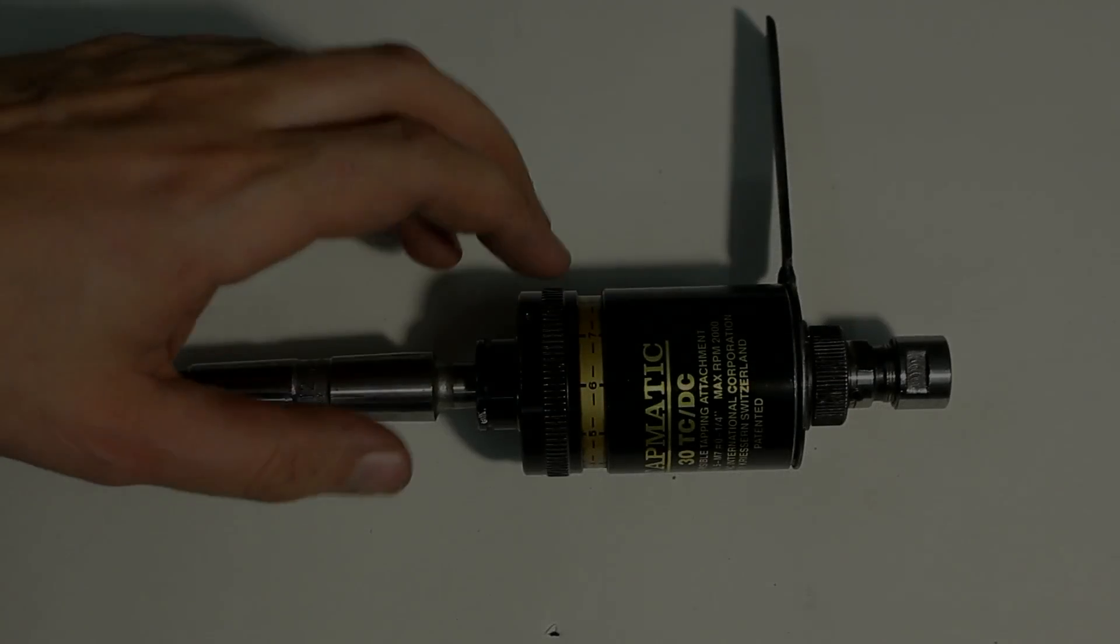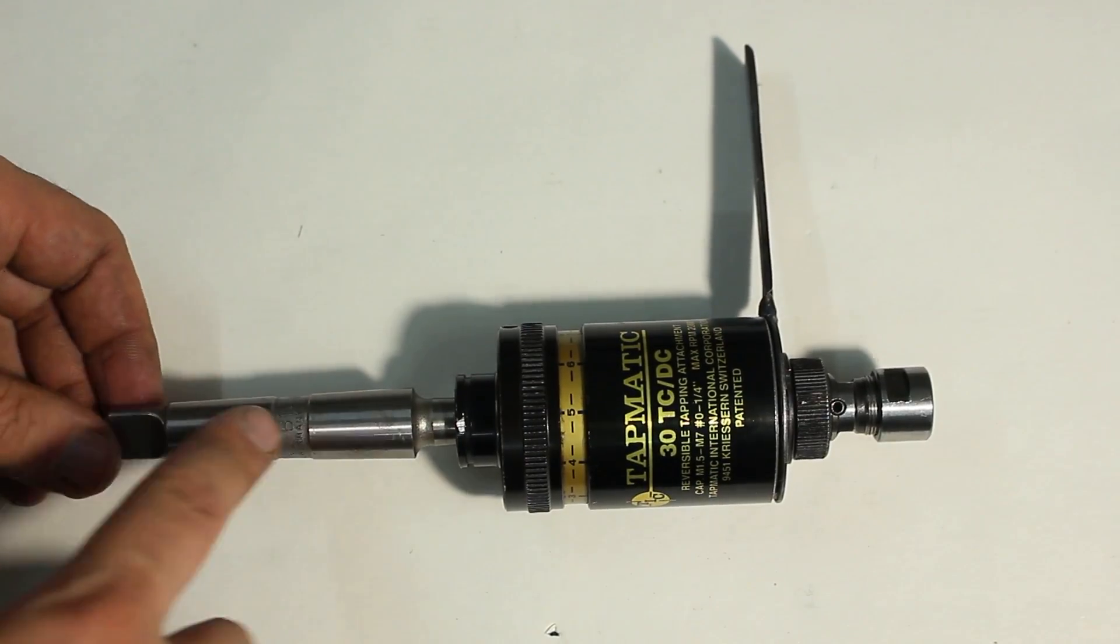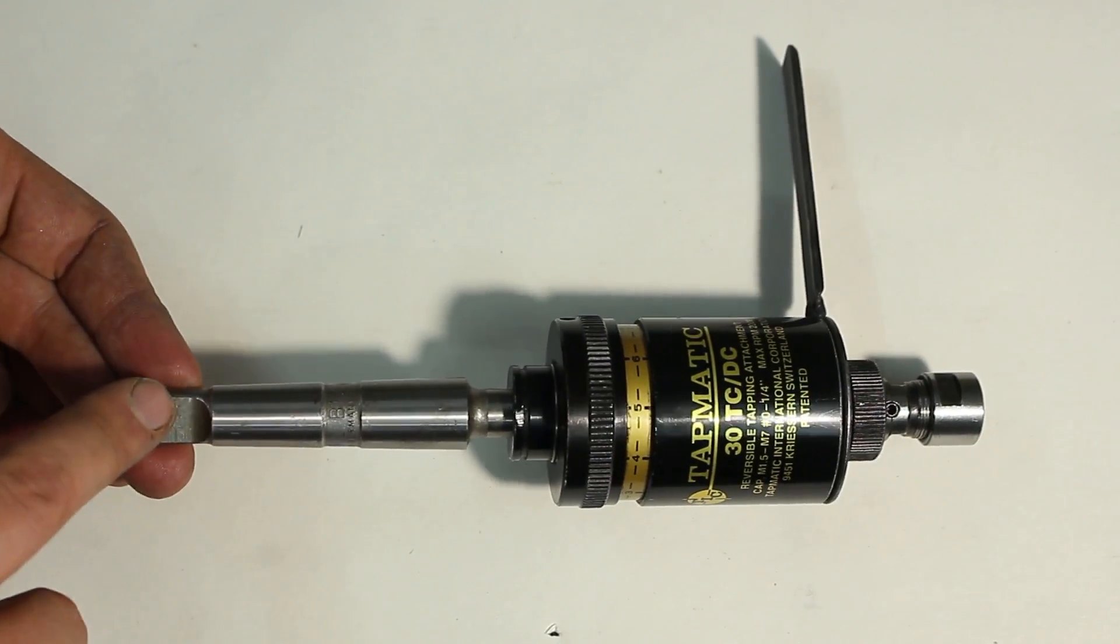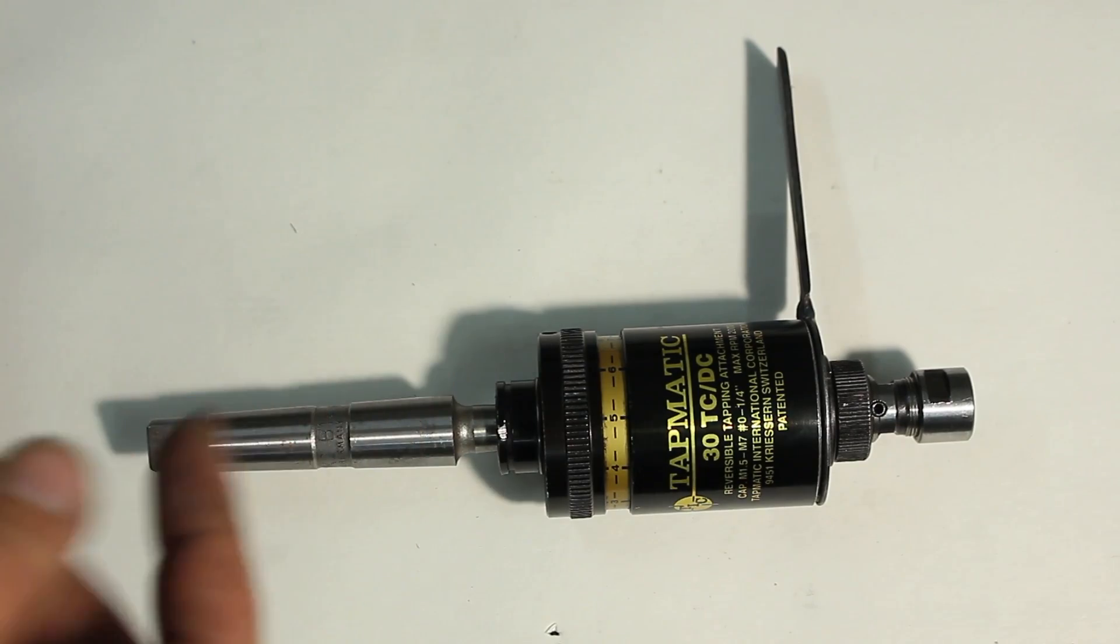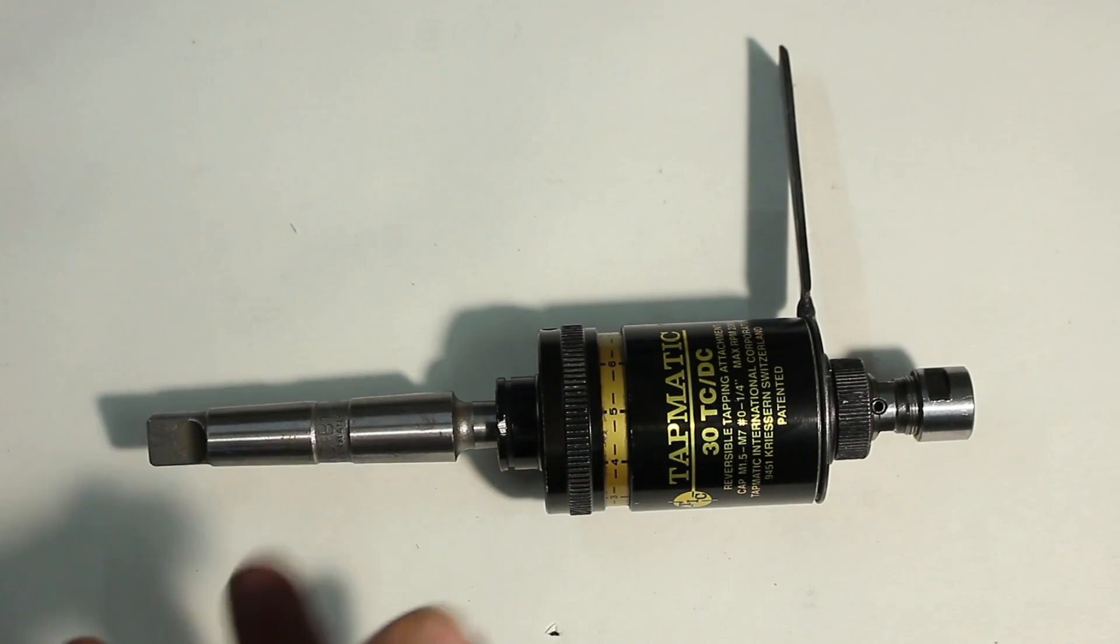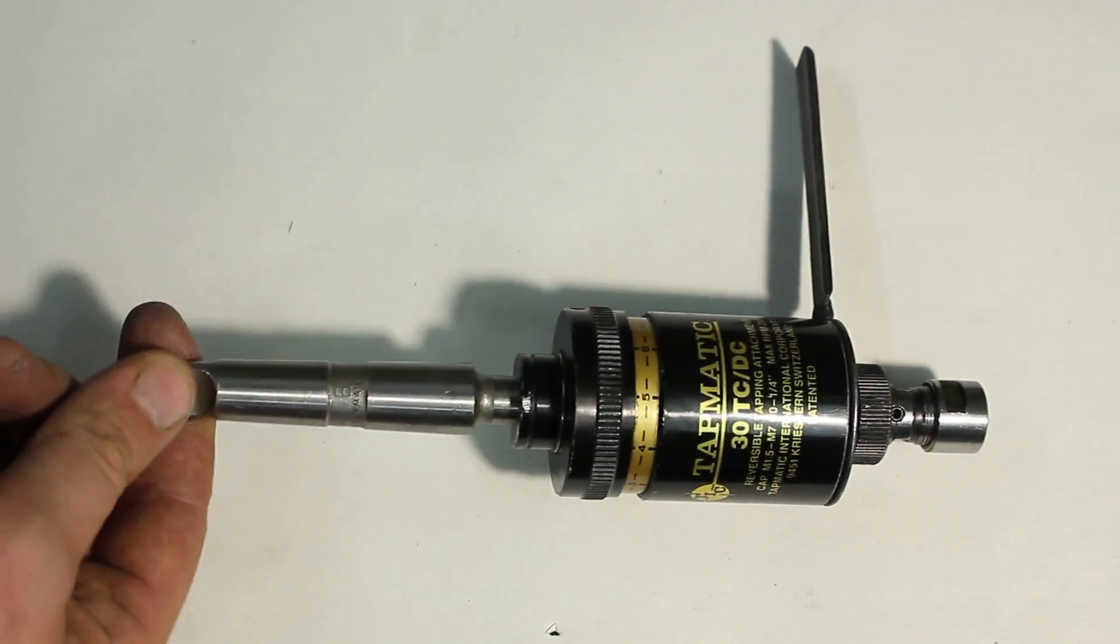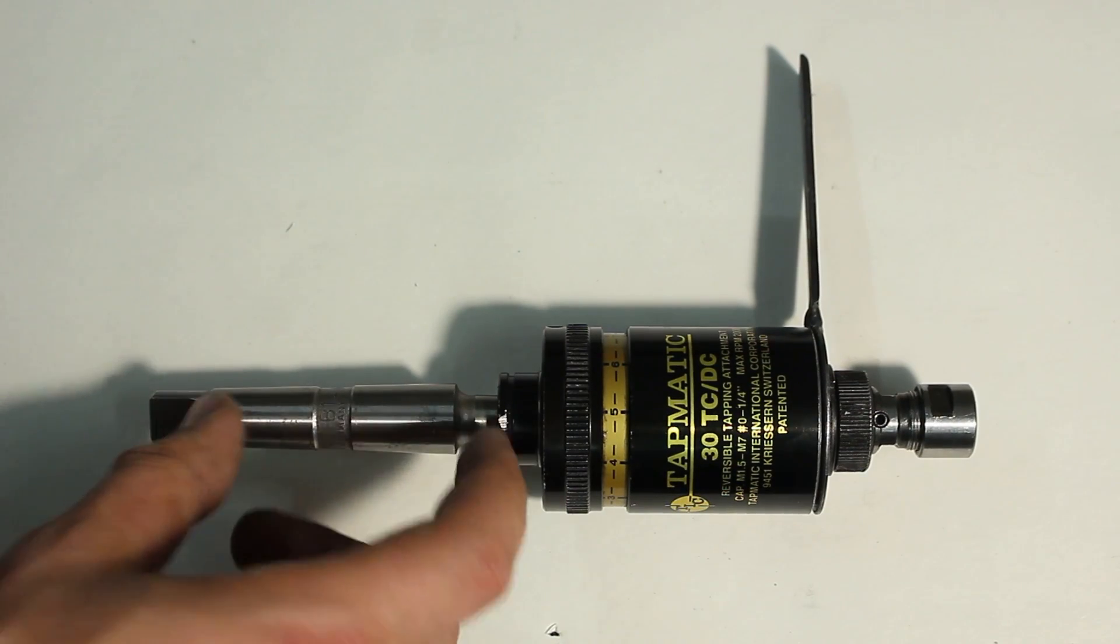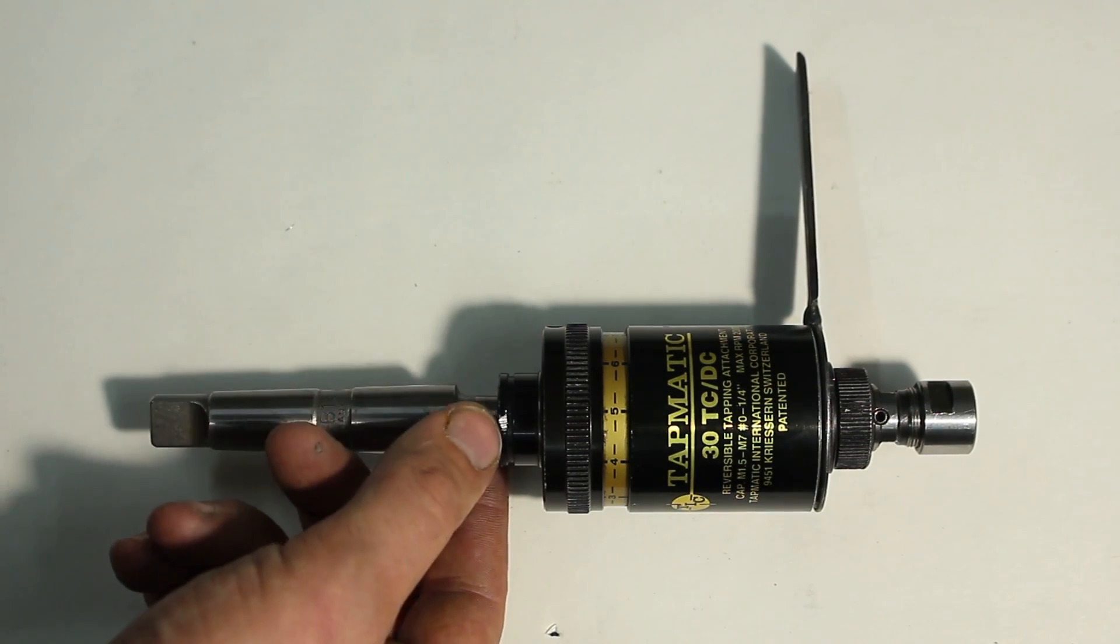I have this Tapmatic 30TC-DC tapping head and it came with a Morse taper 2 shank, but it has the tang on the end that you need on the drill press to get it out of the spindle with the drift. I use this exclusively on my milling machine, and the milling machine of course has a drawbar. When you want to use a tool with a tang, you have to pull out the drawbar and this is quite annoying.